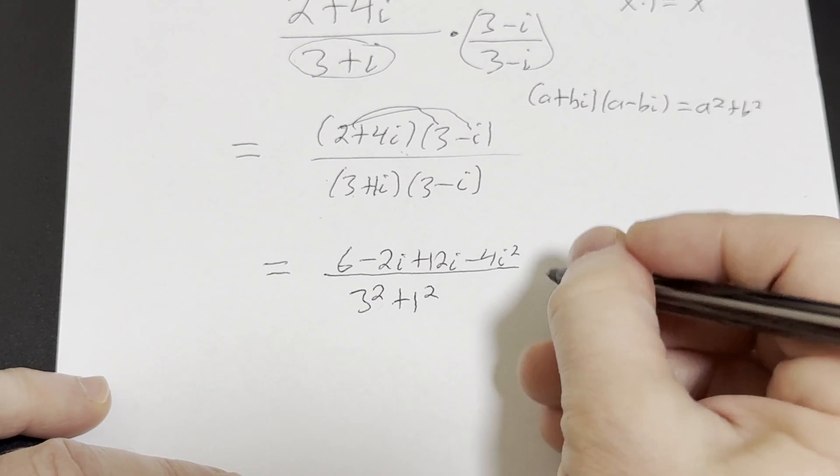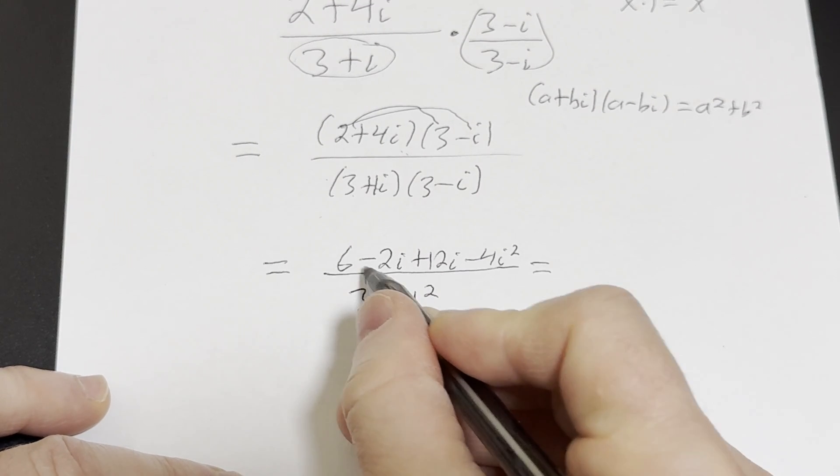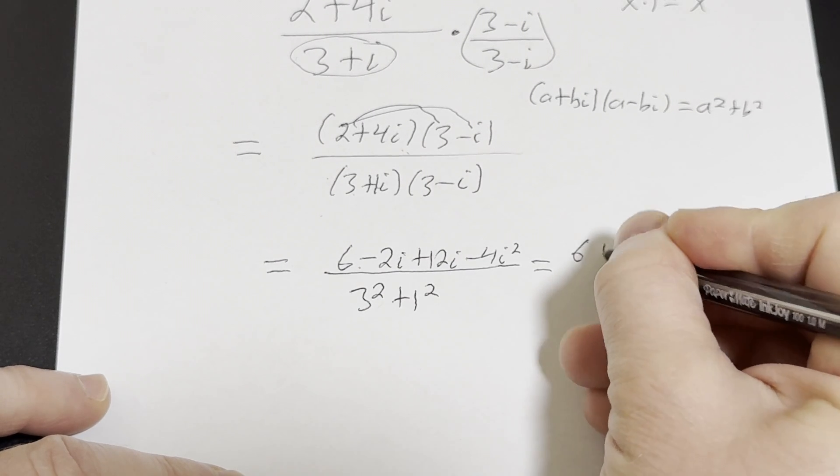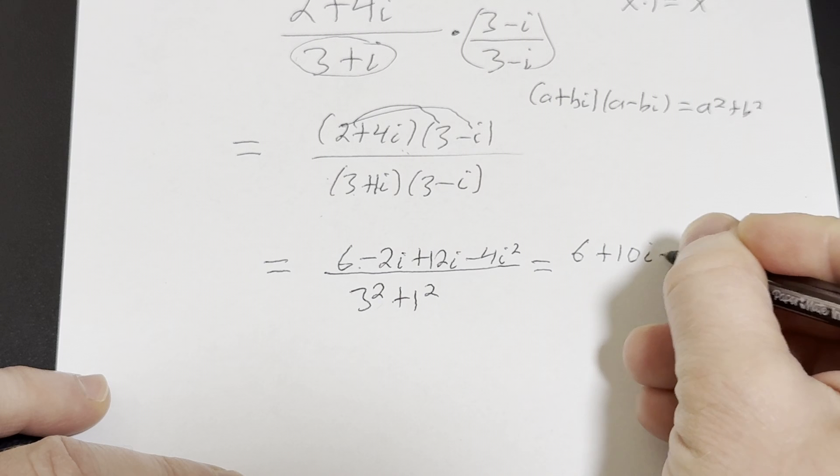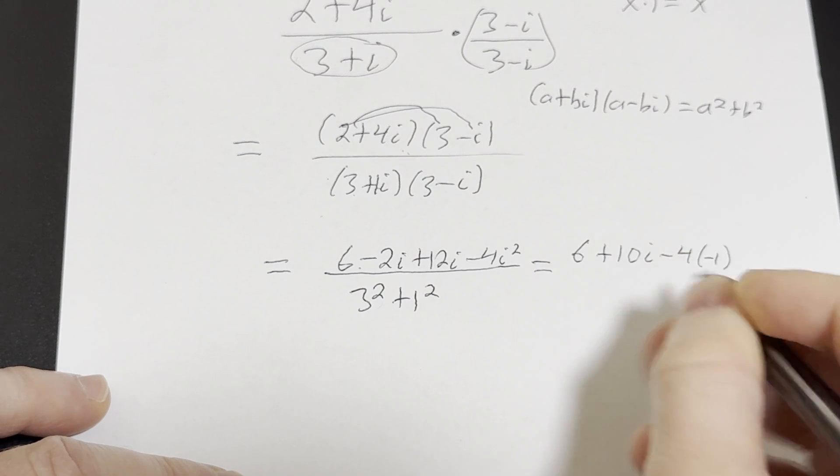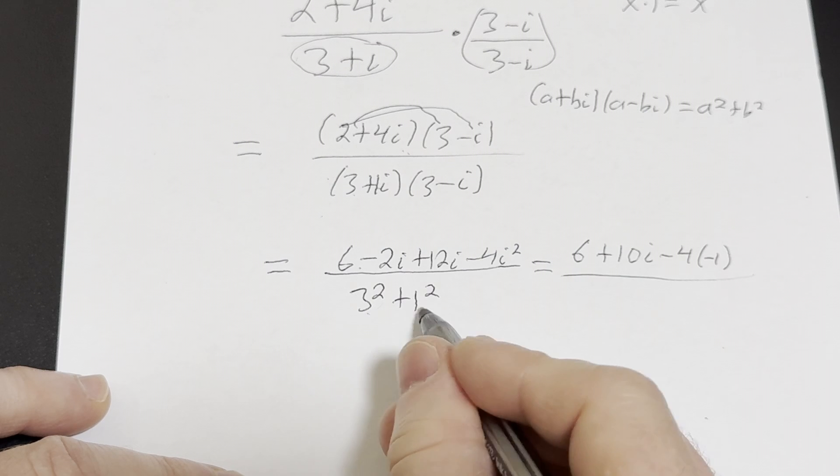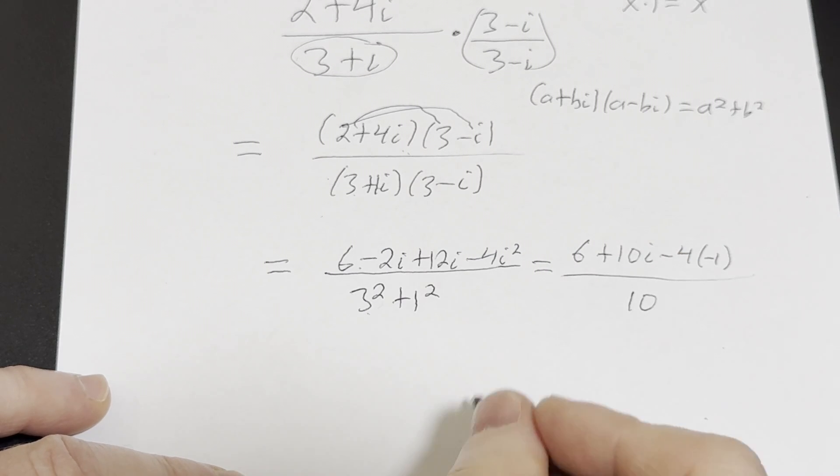Okay, so let's keep going. This is equal to, we have 6 minus 2i plus 12i is 10i. So we have 6 plus 10i minus 4 times negative 1. That's because i squared is equal to negative 1. Down here we have 9 plus 1 which is 10.